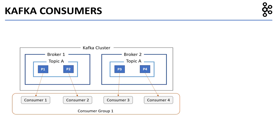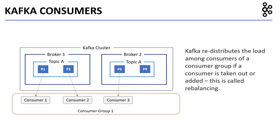Now let's look at another important concept called rebalancing. Let's say one of the consumers, say consumer 4, has an issue and is shut down. Now partition 4 does not have a consumer in consumer group 1. In this case, Kafka rebalances the consumers such that another consumer starts listening to partition 4 — for example, consumer 3 listens to both partition 3 and partition 4. When consumer 4 comes back up, Kafka rebalances again so that consumer 4 listens to partition 4 and consumer 3 no longer listens to partition 4.